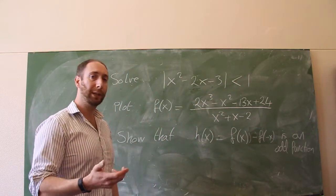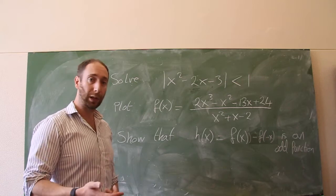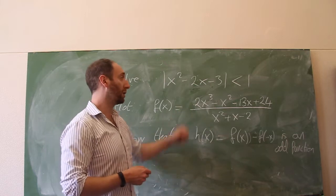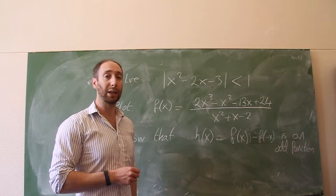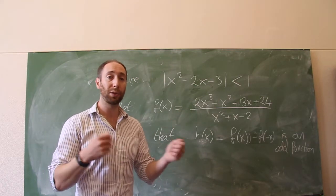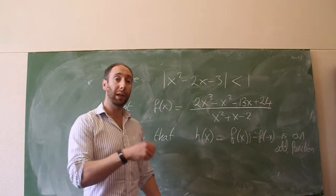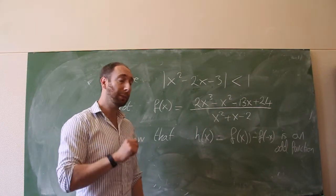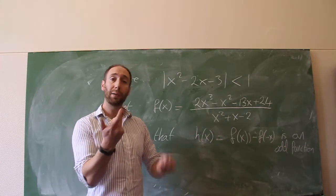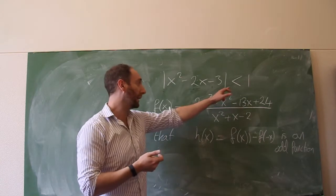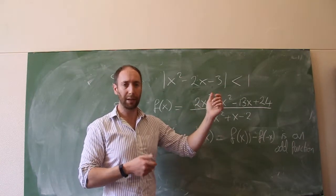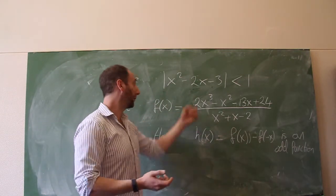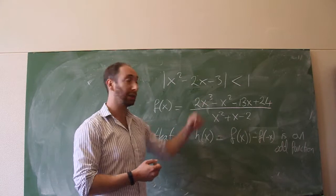With inequalities, there are certain properties that we know hold, and we can apply those rules to the expressions we get in order to solve this. For instance, if we add the same thing to both sides, the inequality holds. If we multiply both sides by a positive number, the inequality still holds. If we multiply by a negative number, the inequality sign flips from less than to greater than. So there are certain things we can use to manipulate the expression and find the values of x which solve this.